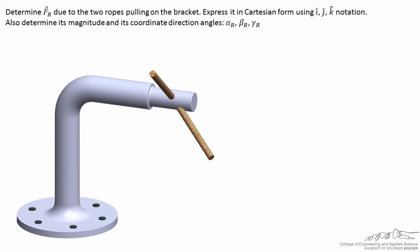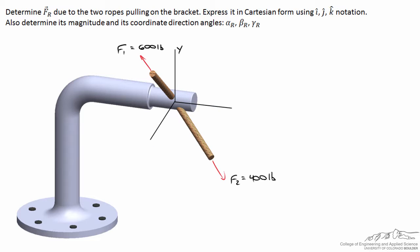Of the two ropes we'll call this rope number one, and it pulls with a force of 600 pounds, so the vector F1 has a magnitude of 600 pounds. We'll call the other rope two, and it pulls in this direction with a force of F2 equal to 400 pounds. We'll also establish coordinate axes: the y axis pointing straight up, the x axis down the bracket axis, and the z axis orthogonal to both. The resultant force is simply the vector sum F1 plus F2.